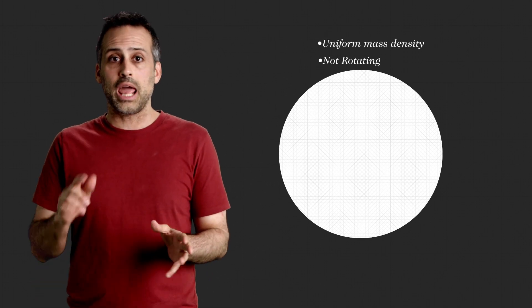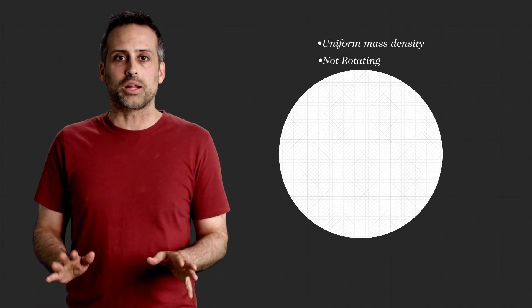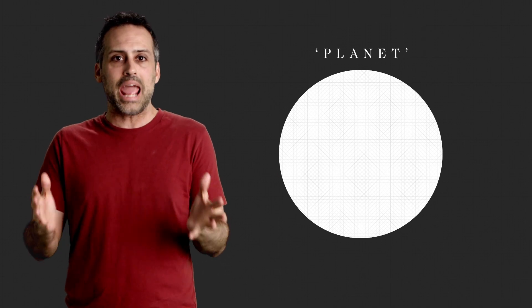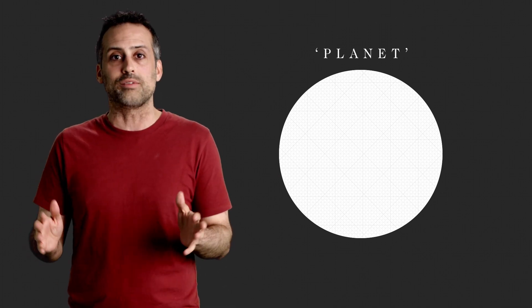All right, pretend you have a sphere with the same mass density throughout. That sphere is not rotating, and it's not orbiting any other larger bodies. For simplicity, I'm going to refer to this sphere as a planet, but it could be any other massive body, a star, whatever.